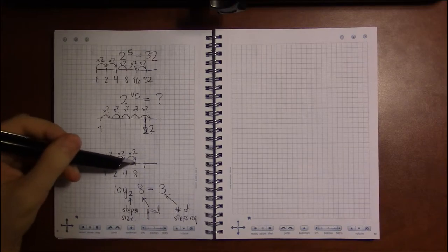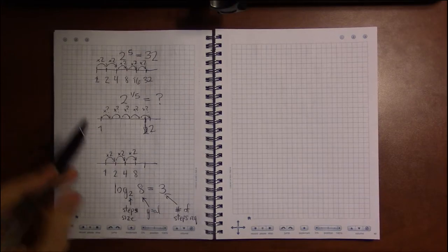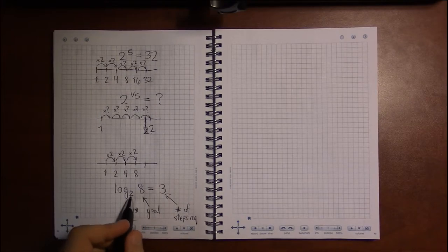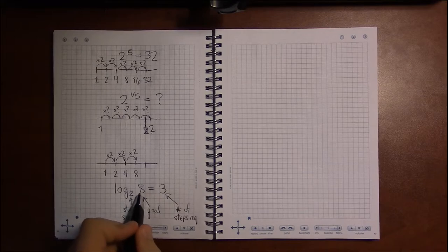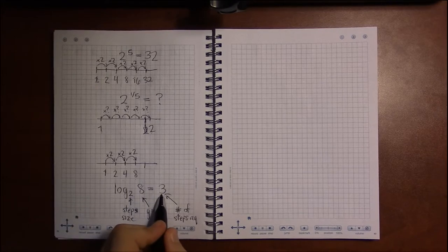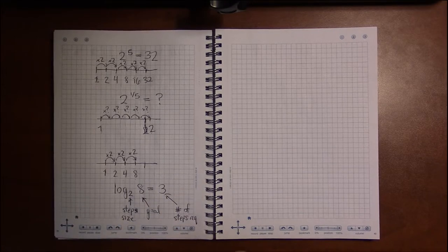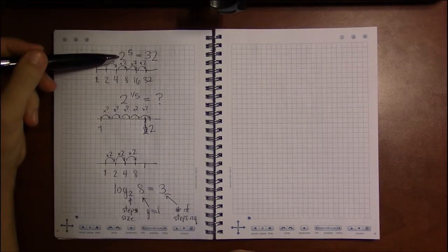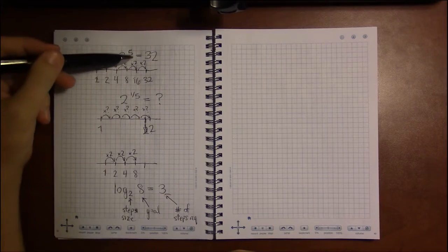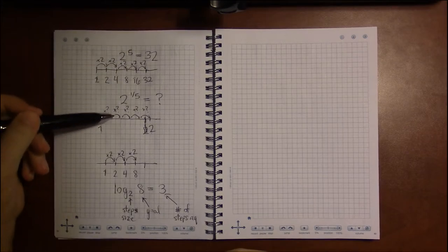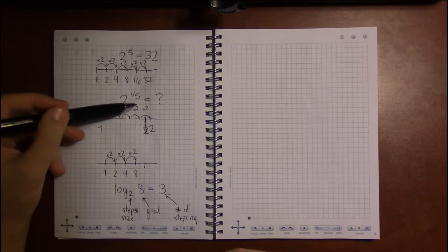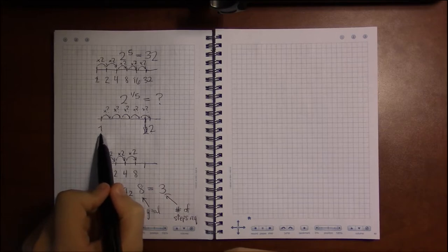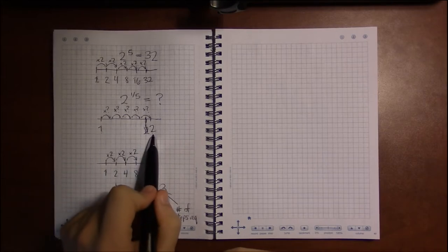And this is the idea of logarithms. It's how many times do we have to multiply by 2 to get 8? And in this case, the answer is simply 3. So, logarithms take exponents, and they're asking a different question than radicals, than fractions in the exponent.